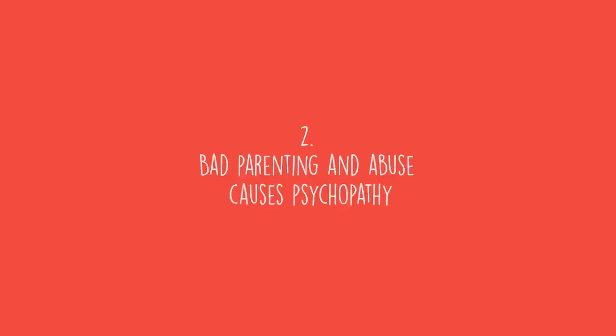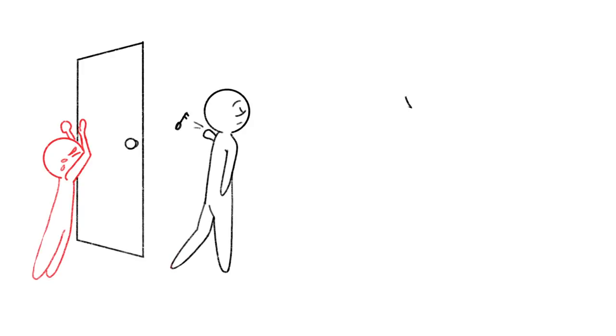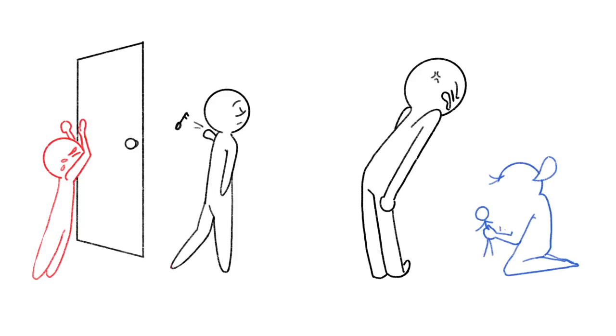Number two: Bad parenting and abuse causes psychopathy. It seems plausible that psychopaths can be bred by an abusive childhood, right? Although there is a link between child abuse and antisocial behavior, there's not enough evidence to show that it can extend directly to psychopathy.